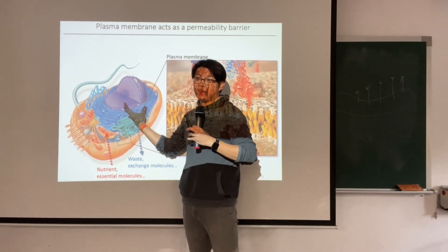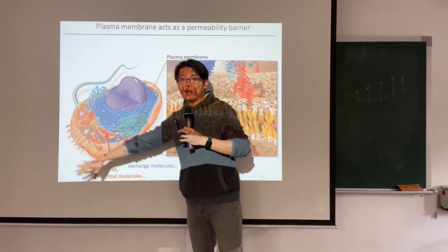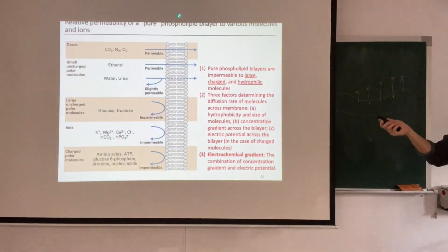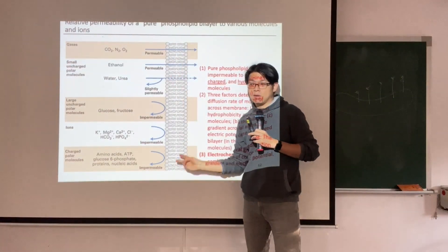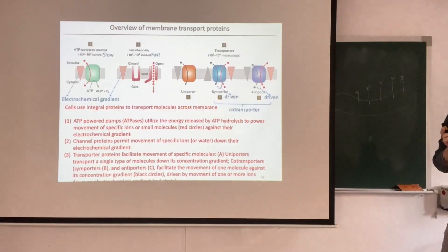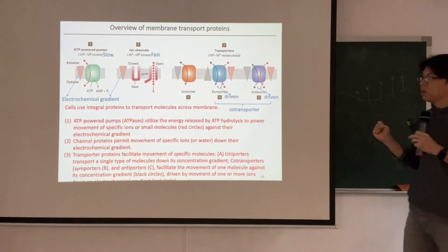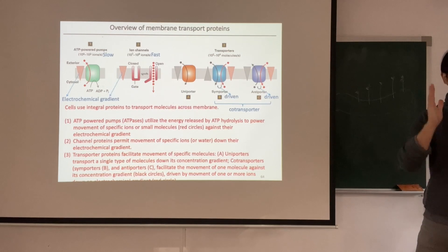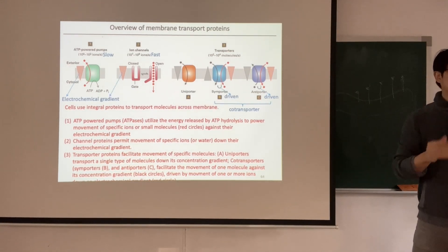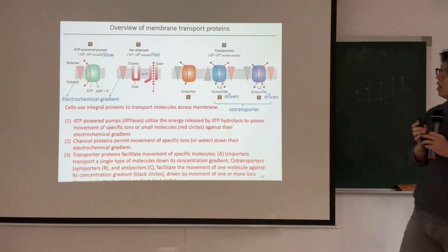Cells need to generate a specific intracellular environment to establish metabolism quite different from the extracellular space — that is why we call them living. Pure phospholipids alone cannot establish such a cell-specific environment. Cells need the help of membrane proteins. Membrane proteins are the ones that generate this cell-specific environment. Several membrane proteins on the membrane transport specific molecules to help cells generate their specific internal environment. We will talk about ATP-powered pumps, ion channels, and different transporters.